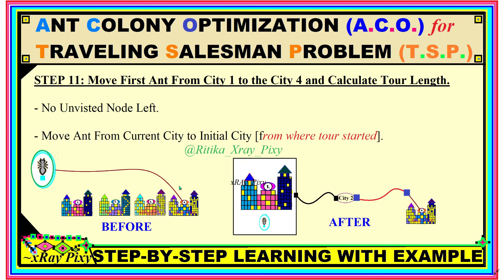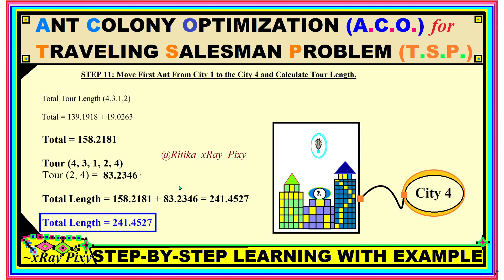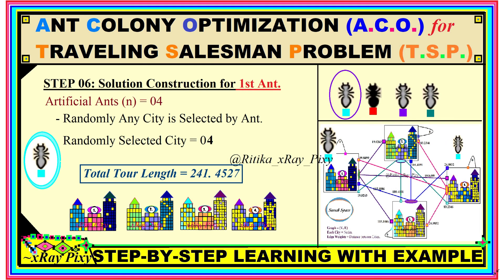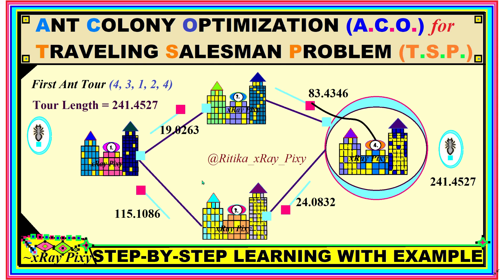Since no unvisited nodes remain, we move the ant from its current city back to the initial city where the tour started. The ant moves from City 2 to City 4. We add this distance to the total, and the final tour length for the first ant is obtained. The complete first-ant tour is: City 4 → City 3 → City 1 → City 2 → City 4, with a total tour cost of 241.4527.